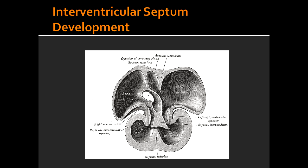Describe what you see on picture 3 of the interventricular septum development on page 250. On image 3, you see the growth of the endocardial cushions, which separates the atria from ventricles, and this contributes to both atrial separation and the membranous portion of the interventricular septum.